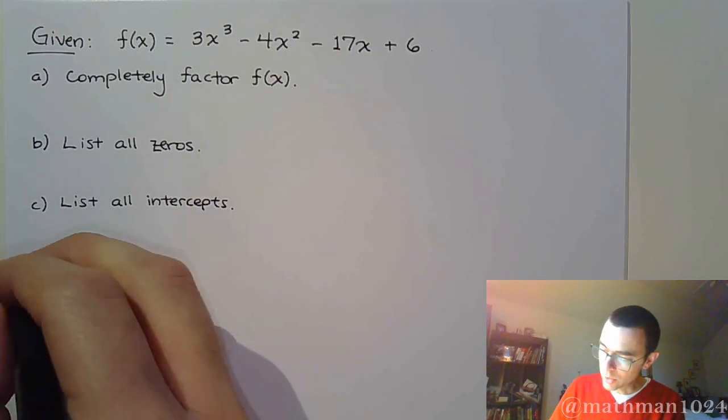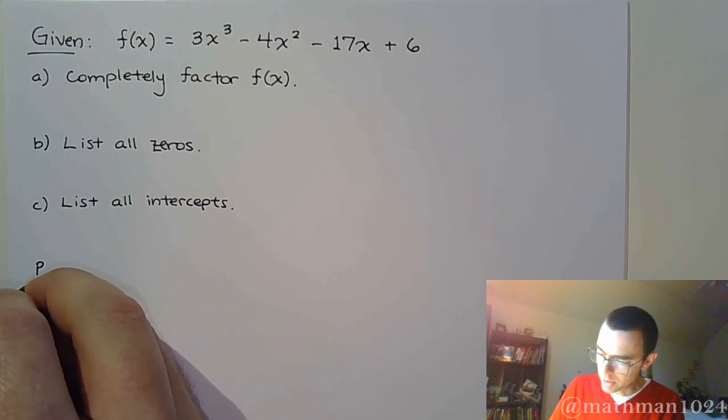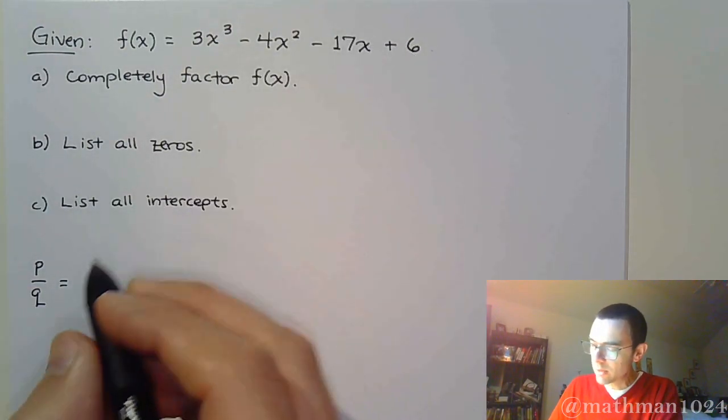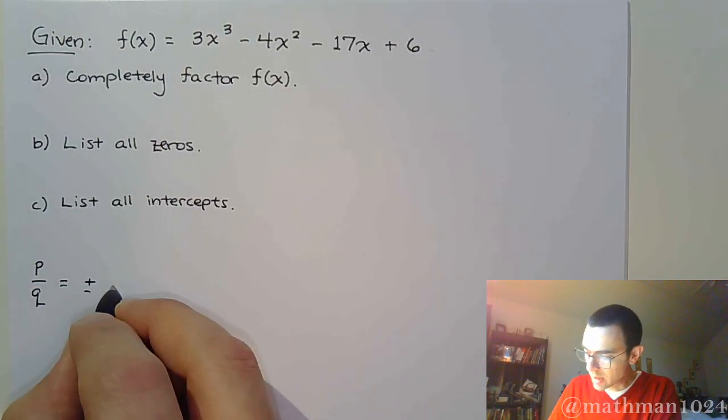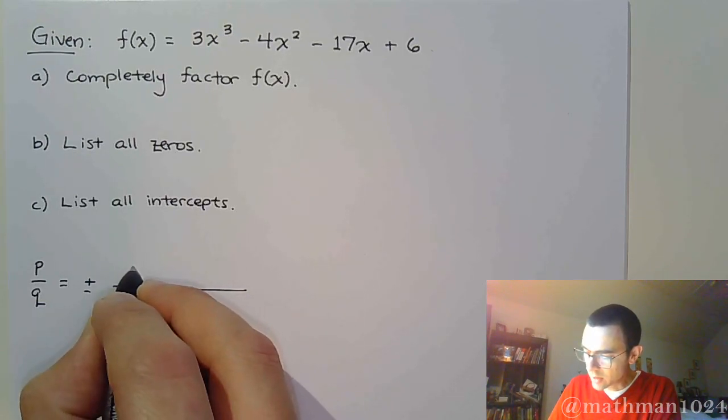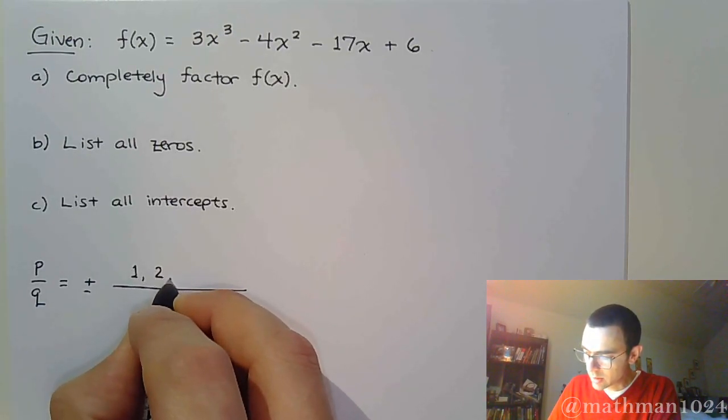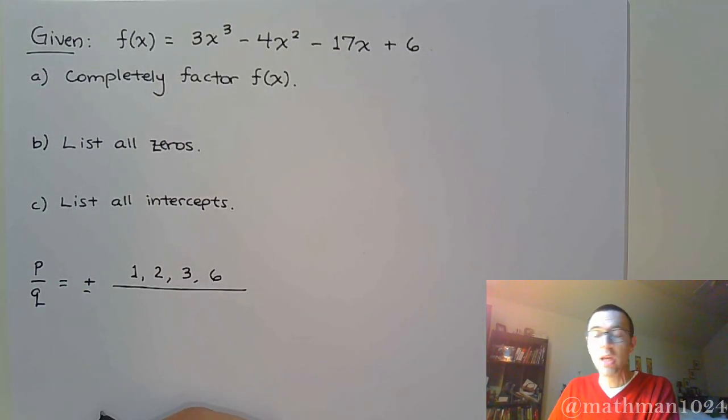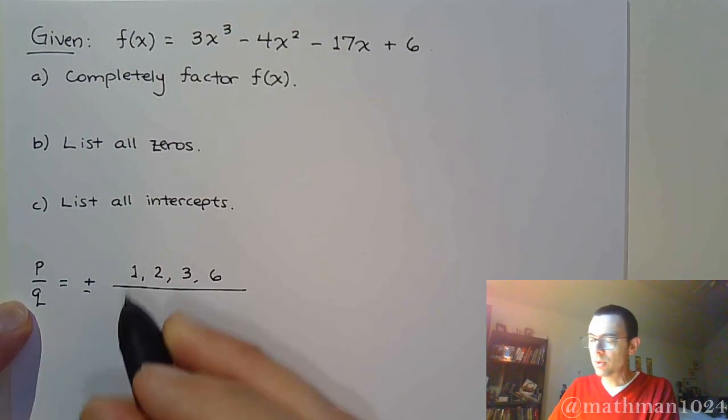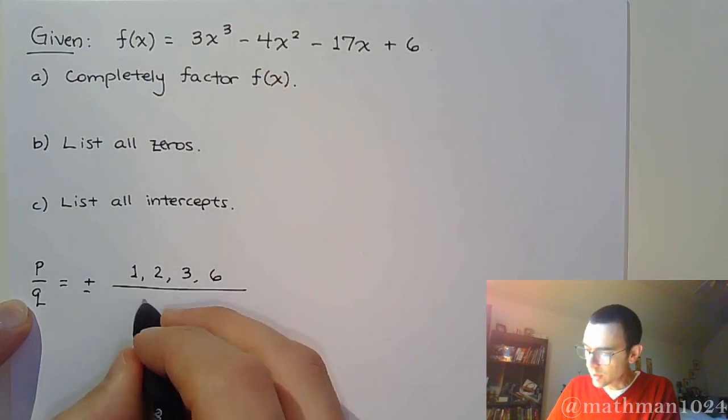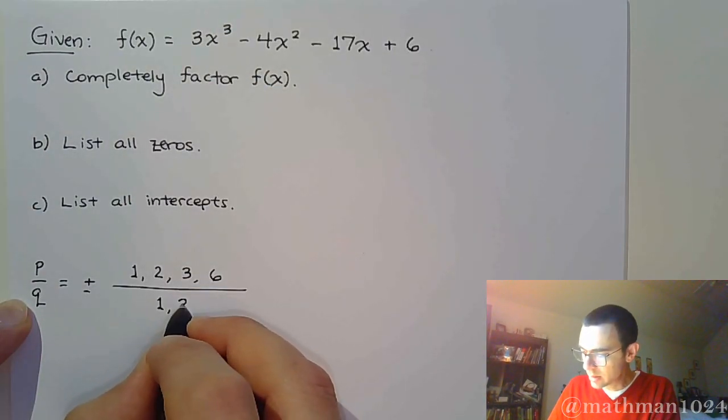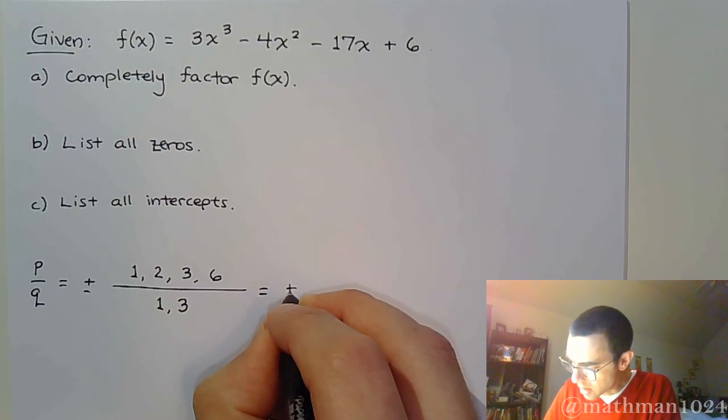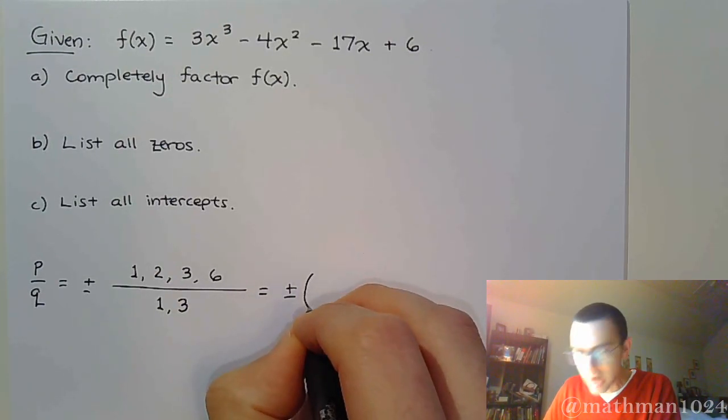Okay, so when we do this, again we go back to P over Q. P will be factors of that constant term. So, you look at 6, and your factors are 1, 2, 3, and 6. And then Q will be a factor from your leading coefficient of 3, so those factors are 1 and 3.